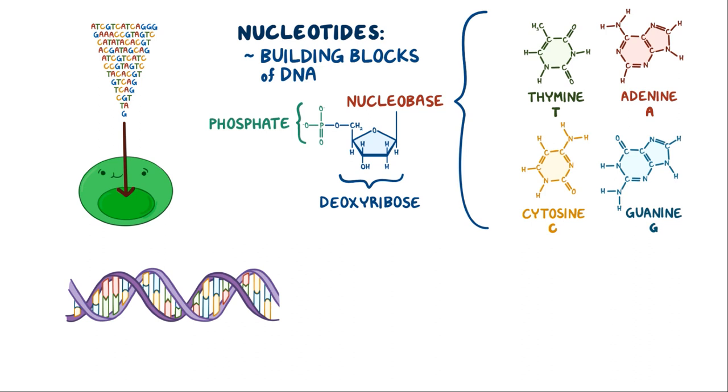The nucleotides on one strand form hydrogen bonds to complementary nucleotides on the other strand. Specifically, A bonds with T via 2 hydrogen bonds, and C bonds with G via 3 hydrogen bonds.